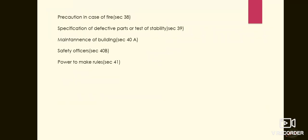Next we are discussing precaution in case of fire, discussed in session 38. Every factory shall be provided with means of fire warning signals, unlocked doors and openings towards outside the workroom, free passageways, and easily openable windows.